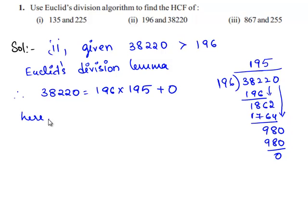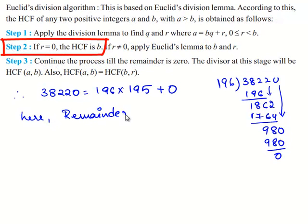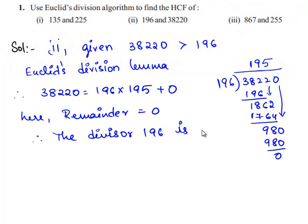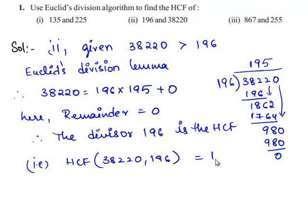Here the remainder is equal to 0. Therefore the divisor 196 is the HCF. That is, HCF of 38,220 and 196 is equal to 196.